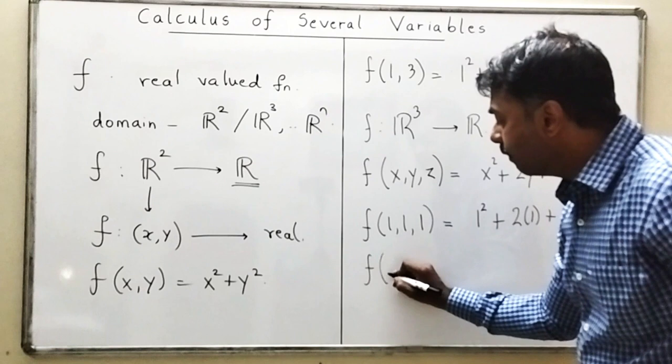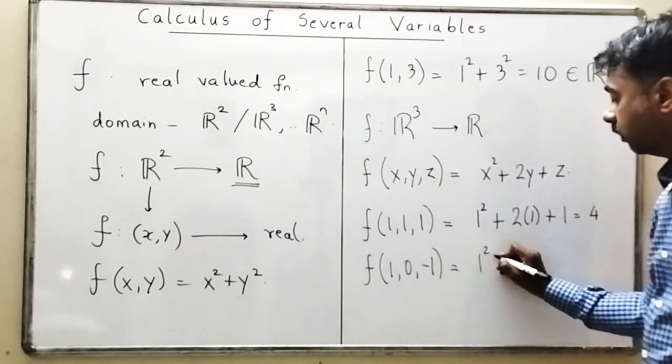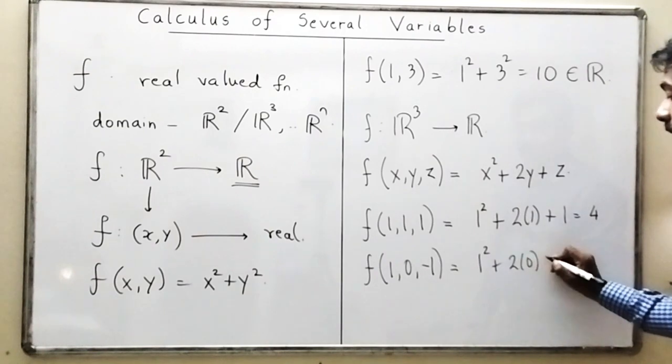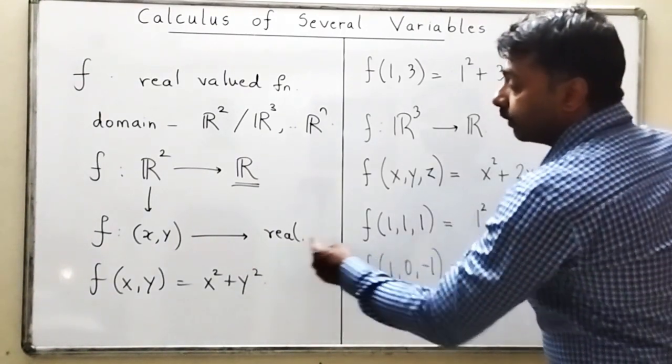You can even take any point, take (1,0,-1), still you can evaluate it as 1² + 2(0) + (-1) which is equal to 0. So these are all types of functions.